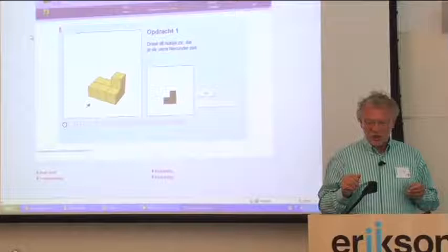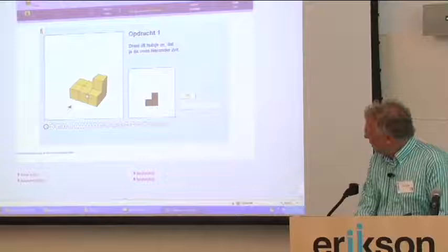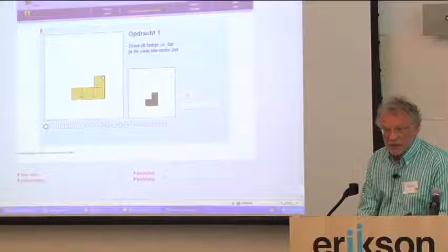These are shapes, as you can see, very simple shapes made of cubes. And now the question is, and I hope it works, I have to rotate this shape until I see the black shape. Now if I do this, it comes close, but you can see it's wrong, right?